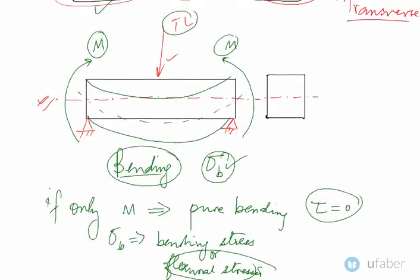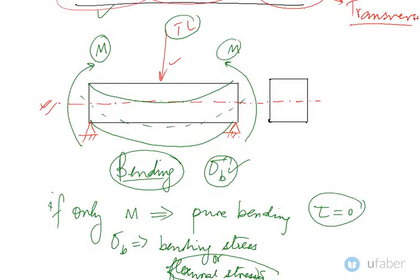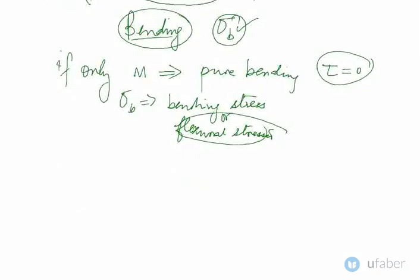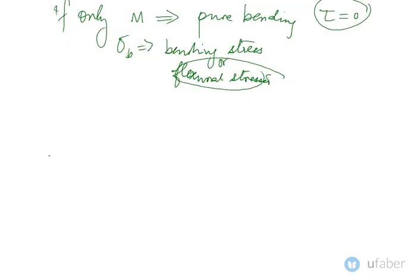What is happening in this beam? Let us draw this beam again. Let me draw it like this, this is the longitudinal axis. Let me name it A, B, C, and D. When you bend it, when you apply a bending moment at its two ends...